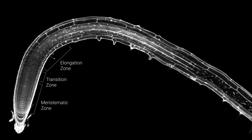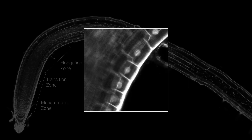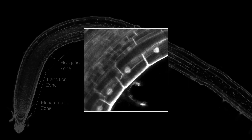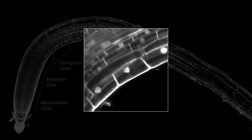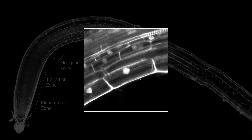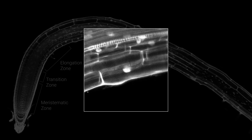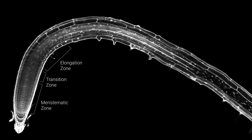In the elongation zone, the cells will lengthen dramatically in a very short time frame and begin to differentiate. Finally, the differentiation zone is where the cells will complete elongation and differentiation, characterized by the development of root hairs.